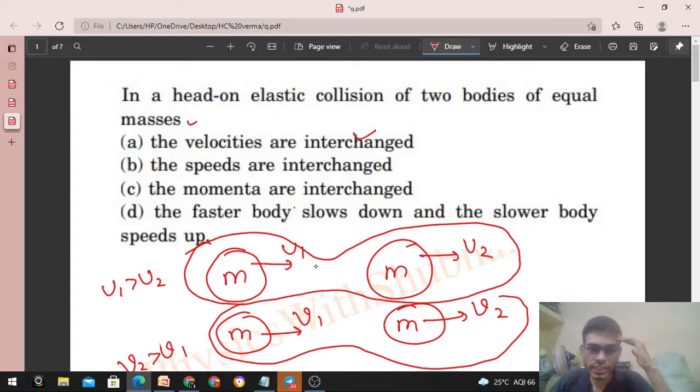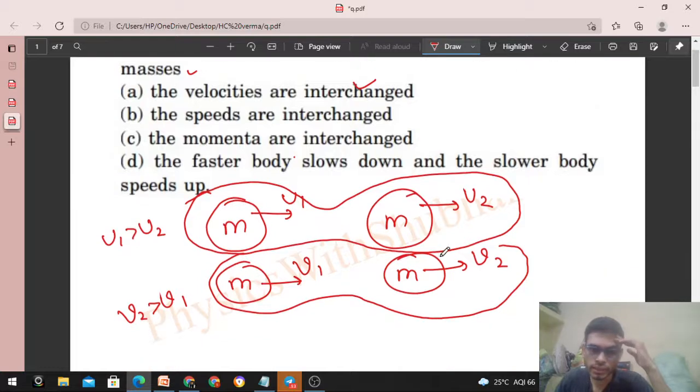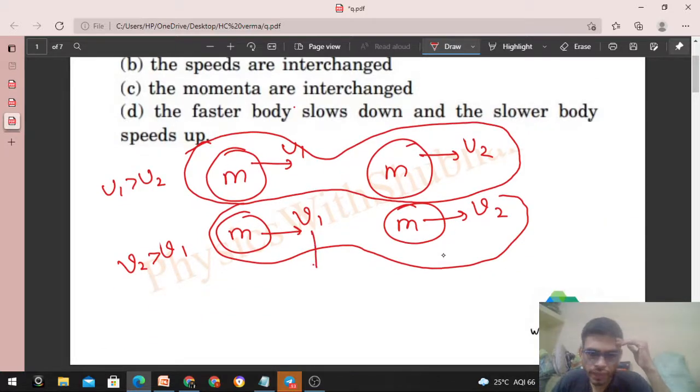So will the velocity interchange? Interchange means that V1 will be equal to U2. Means this body's velocity will go to this one, and this body's velocity will go to this one. Means V2 will be equal to U1.